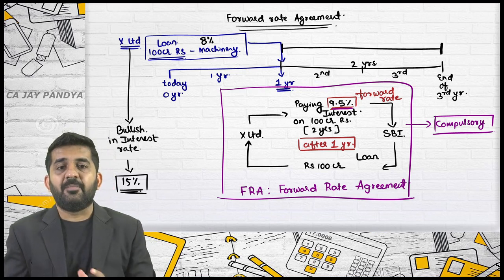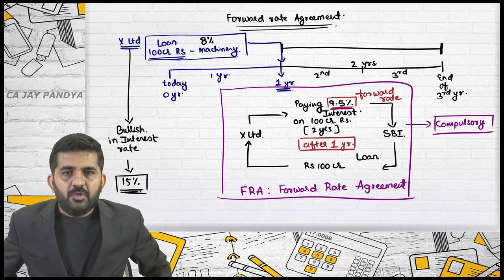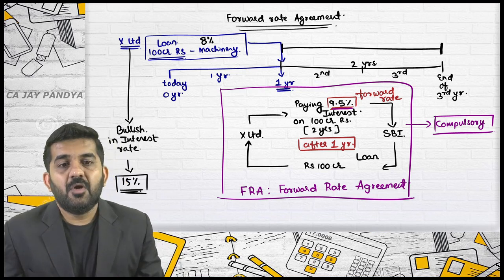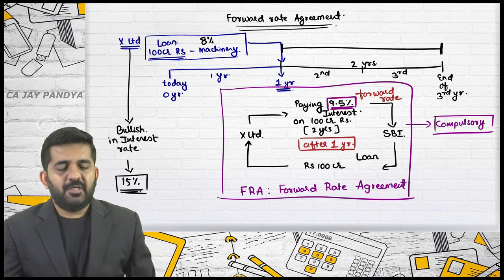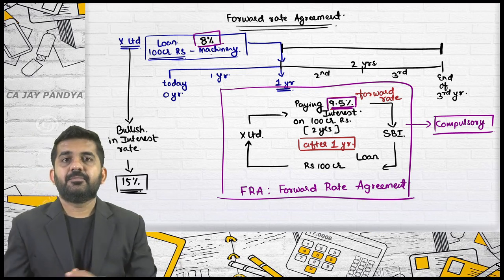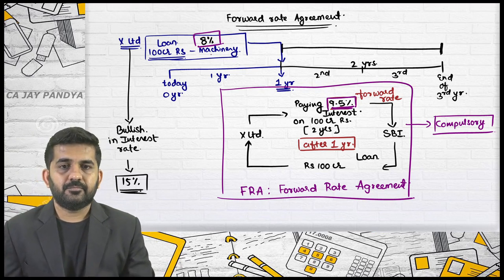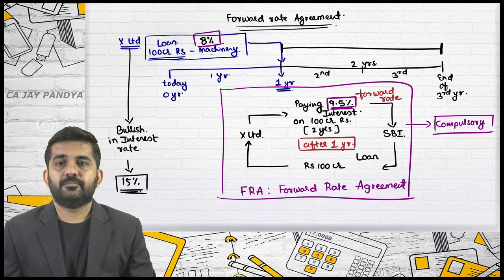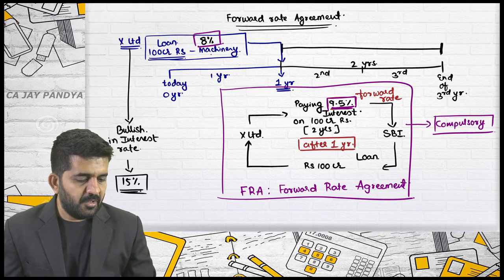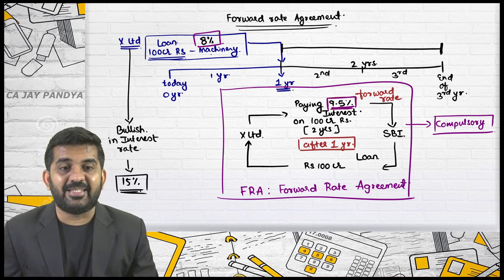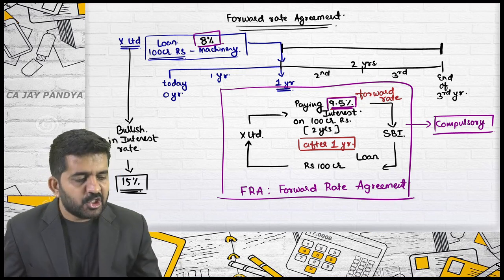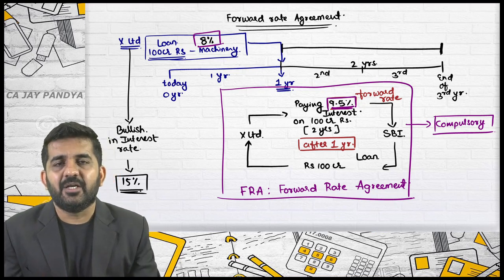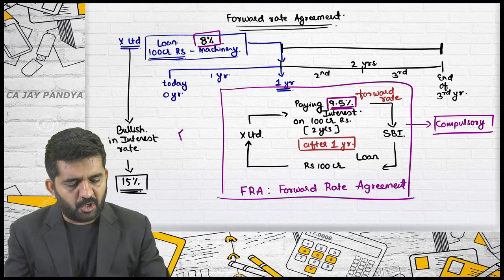Why will I take a loan at 9.5% if I am able to borrow at 8%? Because I am bullish — I think that the rate is going to increase more than 9.5%. So I enter into the contract and I fix the rate. This is, believe me, a forward contract.